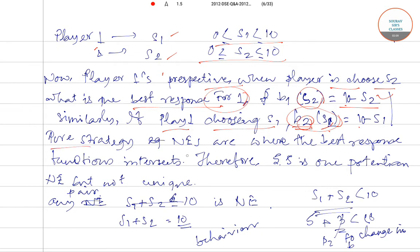So the pure strategy Nash equilibria are where these two best response functions intersect. Therefore, 5,5 is surely one potential Nash equilibrium, but it is not the unique Nash equilibrium. Any Nash equilibrium or any combination pair such like 5,5, 2,8, 1,9, that adds up to 10 is the potential Nash equilibrium.